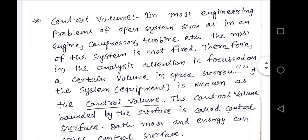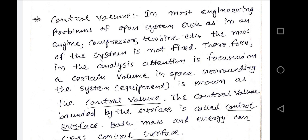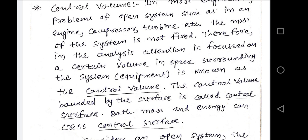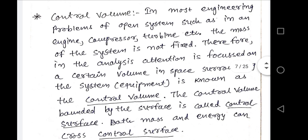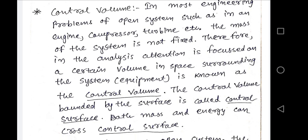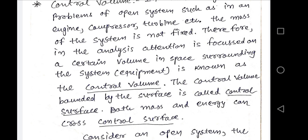In most engineering problems involving open systems such as engines, compressors, and turbines, the mass of the system is not fixed. Therefore in the analysis, attention is focused on a certain volume in the space surrounding the system — this is known as the control volume. Since mass does not remain constant, we concentrate on a certain volume which always remains constant inside the system. That volume is known as the control volume, and it is separated from the surrounding by an imaginary line known as the control surface.